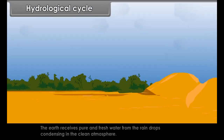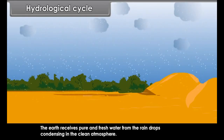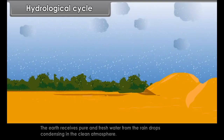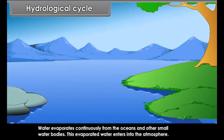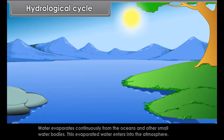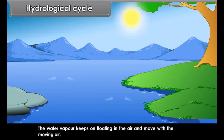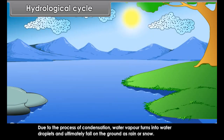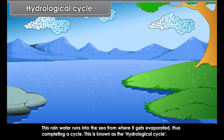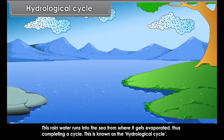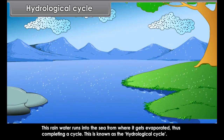Hydrological cycle: The Earth receives pure and fresh water from raindrops condensing in the clean atmosphere. Surface springs also provide fresh water. Water evaporates continuously from the oceans and other small water bodies, and this evaporated water enters into the atmosphere. The water vapor keeps on floating in the air and moves with the moving air. Due to the process of condensation, water vapor turns into water droplets and ultimately falls on the ground as rain or snow. This rainwater runs into the sea from where it gets evaporated, thus completing a cycle. This is known as the hydrological cycle.